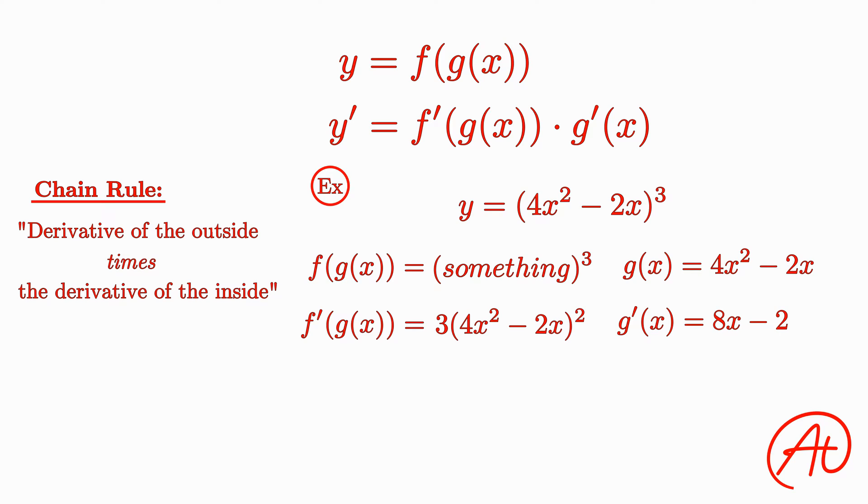Now all we have to do is multiply these two derivatives together, since the chain rule is the derivative of the outside times the derivative of the inside. As a result, we get that y prime equals 3 times (4x squared minus 2x) squared times (8x minus 2).